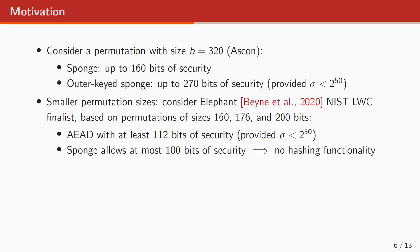The situation changes when we consider even smaller permutations. Consider the NIST lightweight crypto finalist Elephant. The NIST lightweight crypto competition required an authenticated encryption algorithm and optionally a hash function, with a target security of 112 bits assuming online complexity was at most 2 to the 50. Elephant is based on permutations of sizes 160, 176, and 200 bits. With this, the AE mode of Elephant achieved 112 bits of security even with the smallest member. However, if we consider the sponge with these permutation sizes, even with the largest of the three members, it's not possible to get more than 100 bits of security. Therefore, Elephant did not provide hashing functionality simply because its underlying permutations were too small.